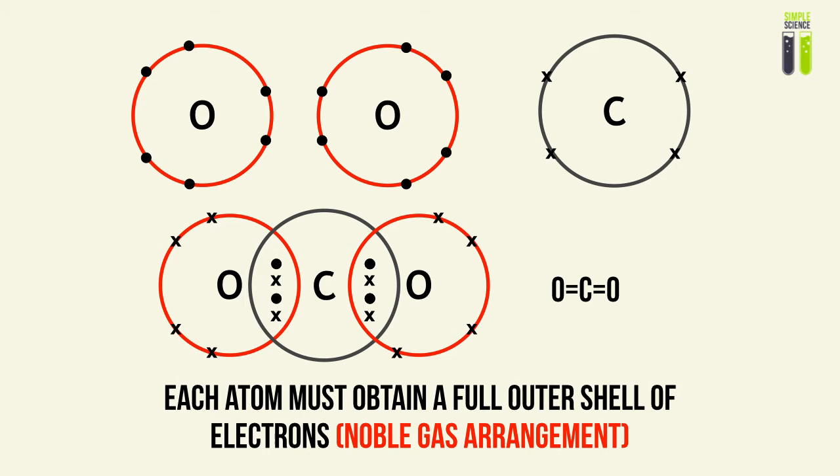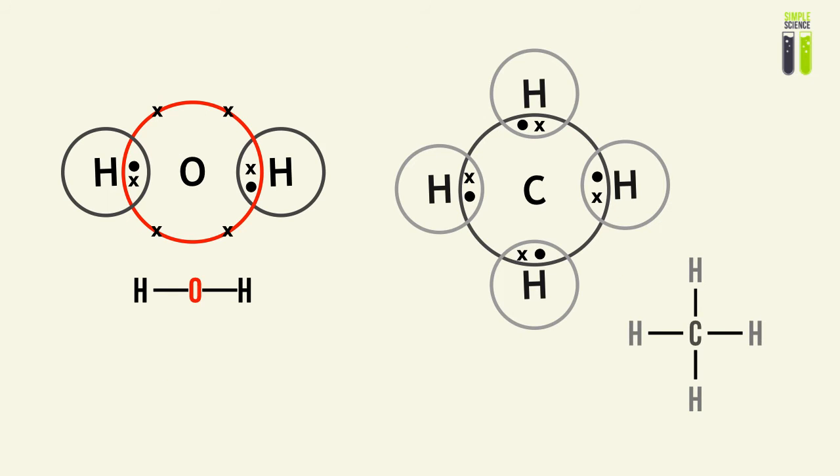Each atom, similar to our basic single-type-of-atom molecule, must obtain a full outer shell of electrons to achieve their noble gas arrangement for their respective period. So mostly we're going to be dealing with eight as the full shell, though this may be up to greater values. Basic examples include water and methane — each atom must satisfy its full shell condition.